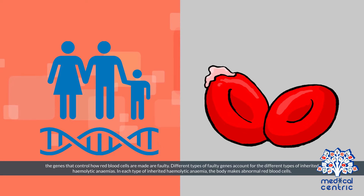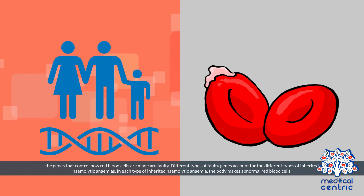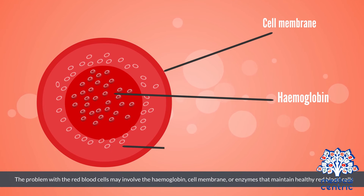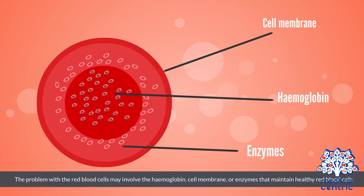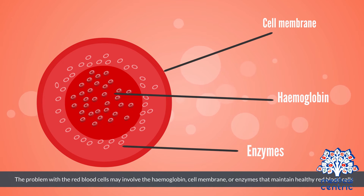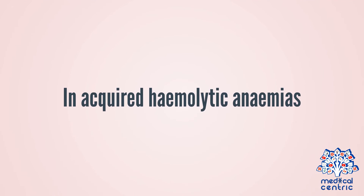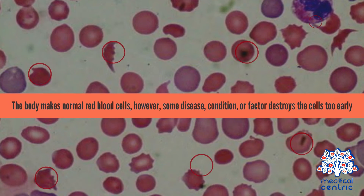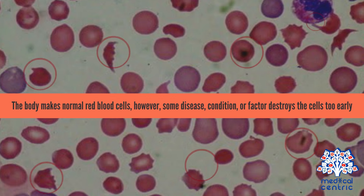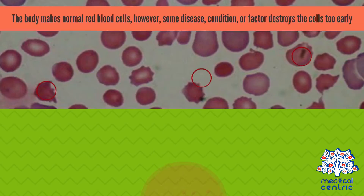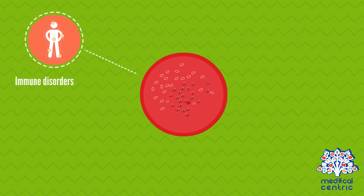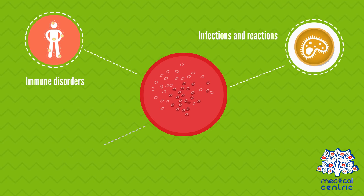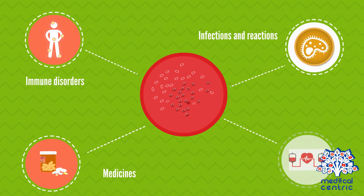In each type of inherited hemolytic anemia, the body makes abnormal red blood cells. The problem with the red blood cells may involve the hemoglobin, cell membrane, or enzymes that maintain healthy red blood cells. In acquired hemolytic anemias, the body makes normal red blood cells; however, some disease, condition, or factor destroys the cells too early. Examples include immune disorders, infections, and reactions to medicines or blood transfusions.